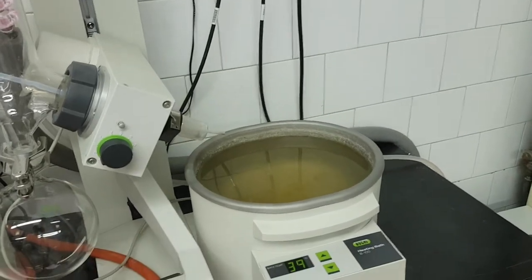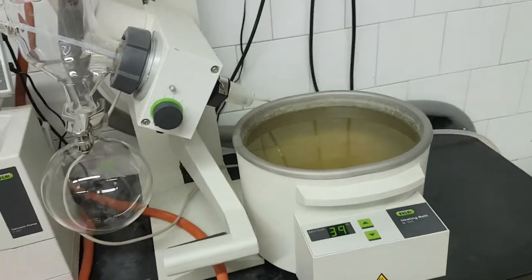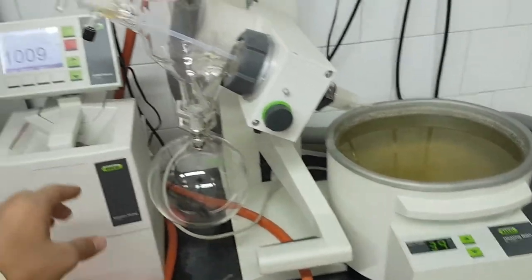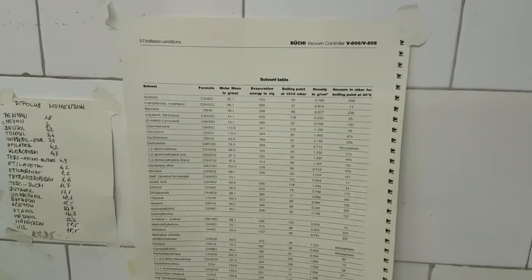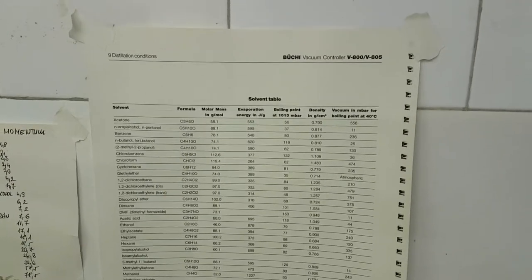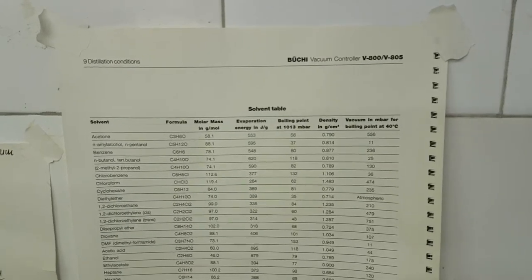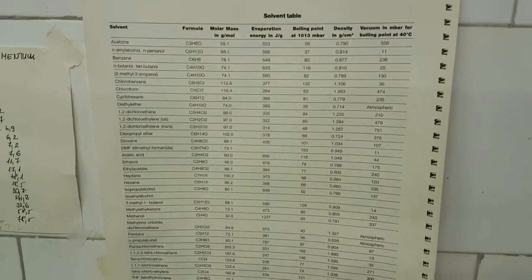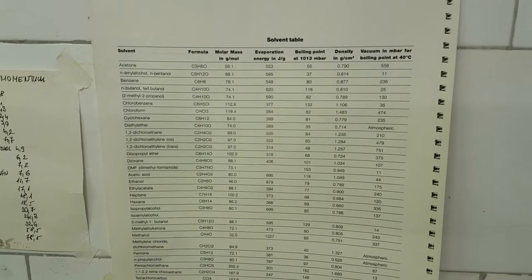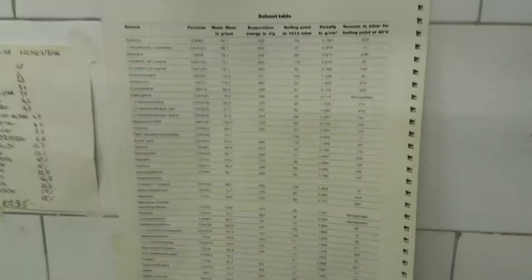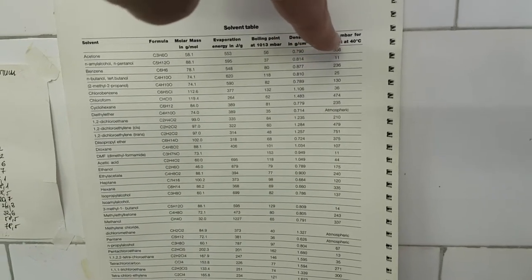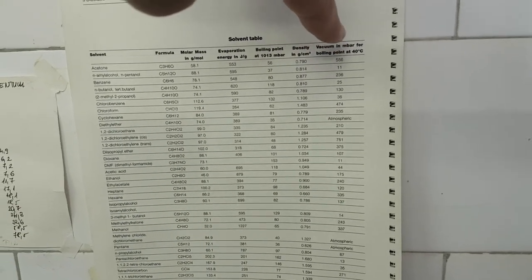Every solvent we use — for example, if we are aiming to remove hexane or ethyl acetate — has its own boiling point and pressure. This is a table listing the most commonly used solvents, showing the vacuum in millibar needed to reach the boiling point at 40 degrees.